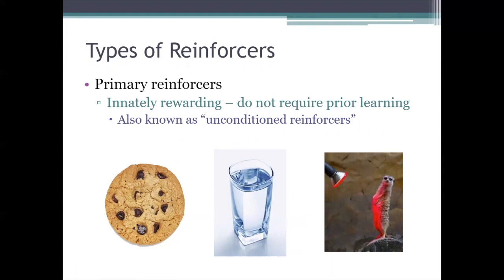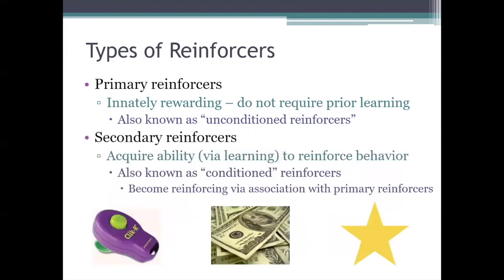Not all reinforcers are like that — they aren't all reinforcing from birth. Some reinforcers have to acquire their abilities to strengthen the behaviors that they follow. Reinforcers like those are known as secondary reinforcers, or sometimes conditioned reinforcers. They aren't reinforcing at first; they start out neutral, just like the conditioned stimulus does in classical conditioning. But they become non-neutral — they acquire reinforcing properties because we learned to associate them with primary reinforcers.